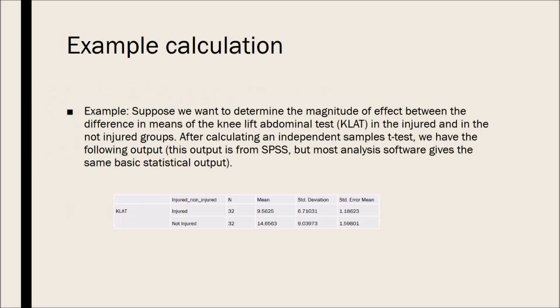So an example calculation. Supposed we want to determine the magnitude of effect and the difference in means of the knee lift abdominal test, let's call it KLAT, and the injured and the non-injured groups. After calculating an independent samples test, we have the following output. This is an output from SPSS, but most analysis software gives the same basic statistical output. So here we can see for the injured group and non-injured group, they both have a sample size of 32, injured has a mean of 9.56, non-injured a mean of 14.65, the standard deviation of the injured group is 6.71, and the standard deviation of the non-injured group is 9.03 or 9.04.